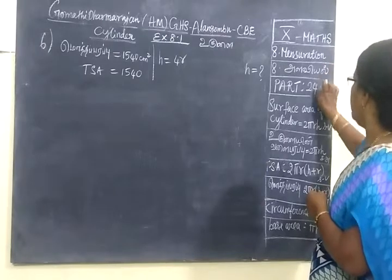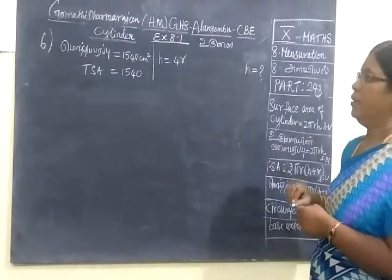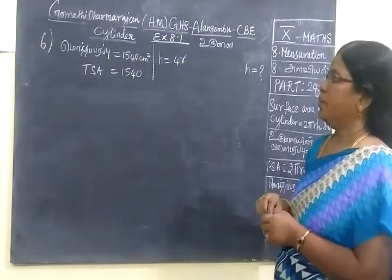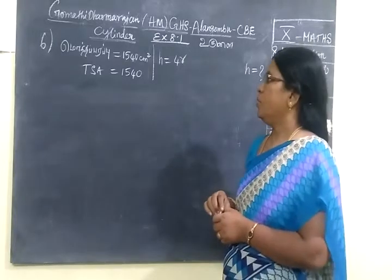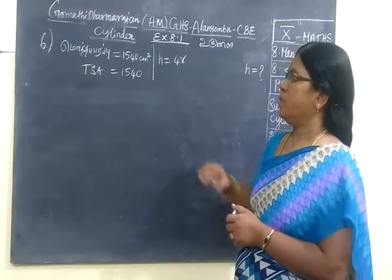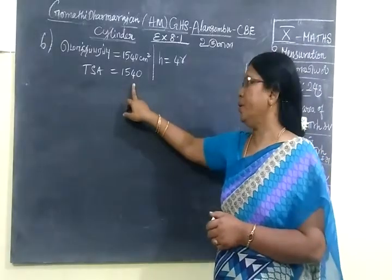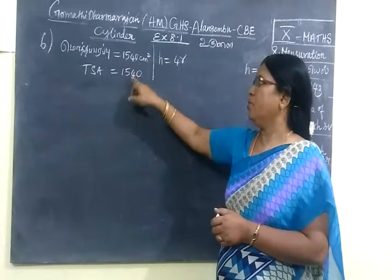Next we see problem 243. That's the 6th question. TSA = 1540. That means TSA, Total Surface Area of the cylinder. Every time I am not writing cylinder.